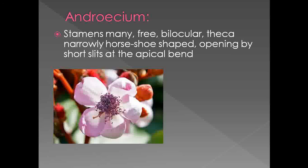Moving towards the androecium: the stamens are numerous — you are unable to count them. The stamens are many, free, and bilocular. If you observe the structure of the anther, the anthers are horseshoe shaped. This is one of the characteristic features of this family. The diagnostic feature of this family is that the anthers are horseshoe shaped.